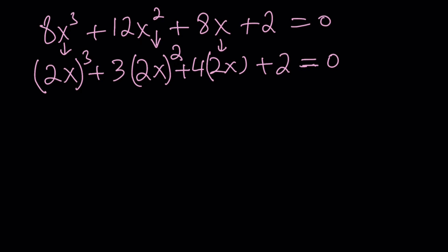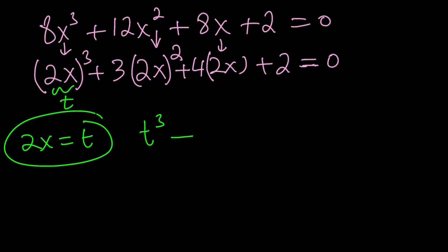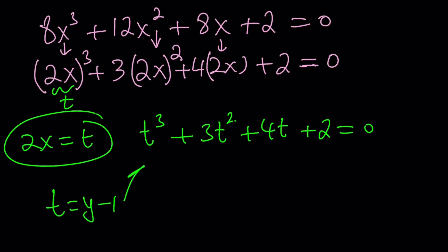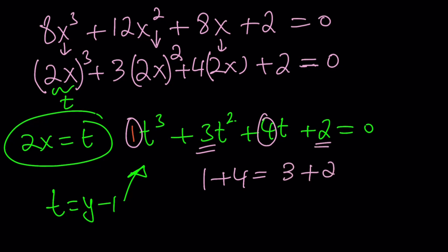Now what is this calling for? It's substitution. Let's call T equals 2x. And now we get T cubed plus 3T squared plus 4T plus 2 equals 0. This is a better cubic. If you want to use the cubic formula, go ahead — replace T with something like y minus 1 to eliminate the T squared term, then use the cubic formula. But there's still a better way. If you look at the coefficients, 1 plus 4 is 5, and so is 3 plus 2. The odds and evens sum to the same value, which means T equals negative 1 is a solution.